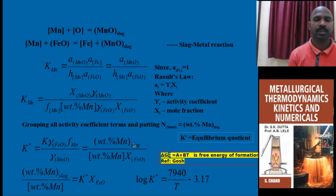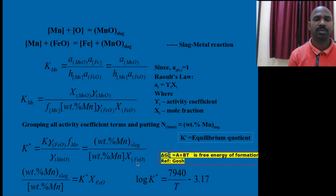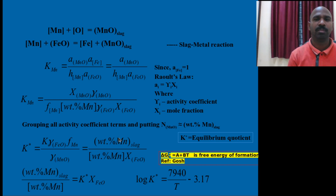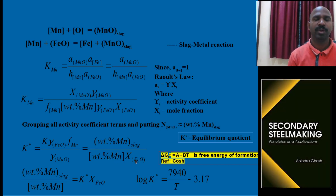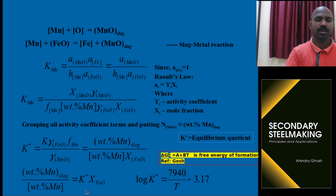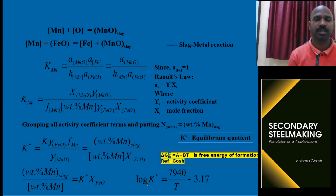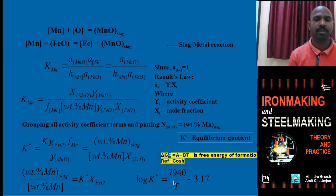Finally, with slag-form Mn, FeO, and Henry's activity of manganese, you can derive the equation. Taking out FeO and simplifying, you arrive at the final equation. This equation comes from the A plus BT form and is provided. And about manganese, at lower temperature K-star increases. Using these equations, let us solve a numerical problem.